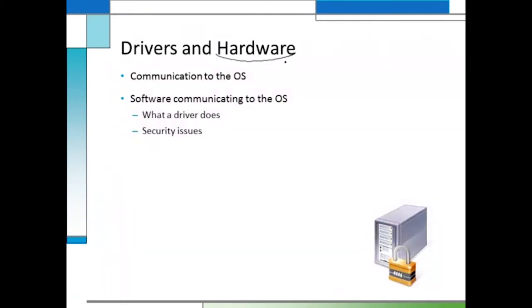Hardware is something you can physically see and touch — if you can grab it and throw it out a window and it breaks, it's hardware. There are many different types with different functions. I've been representing printers as output devices, but other output devices include speakers so you can hear music files, streaming videos, or operating system sounds. Hardware is designed to facilitate I/O — input and output — and printers and speakers are examples of output hardware where we're sending information from the operating system.